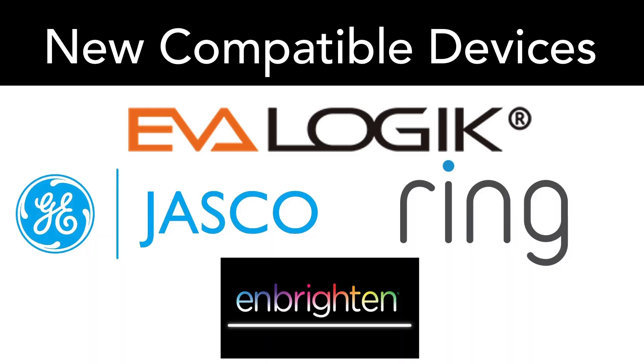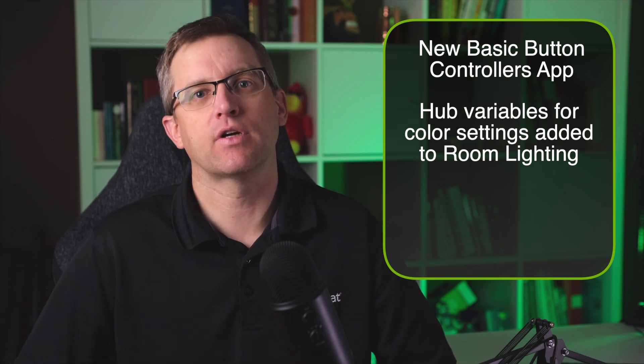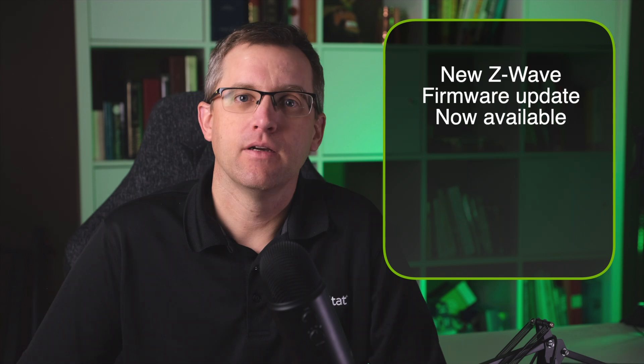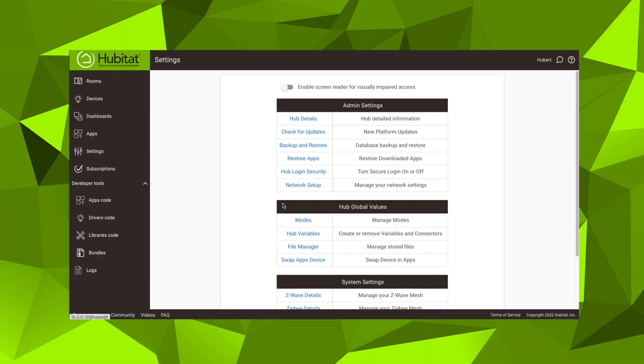Of course, there is plenty more to this update for you non-Apple fanboys. As always, we have several new compatible devices to add to our quiver, including a bunch of new Jasko and Embriton dimmers and switches. We've also added an EVO Logic dimmer and a Ring glass break sensor. Version 2.3.4 adds a new Basic Button Controller app that makes programming your buttons a little bit easier for those who don't need the full rule-building capability of Rule Machine. The Room Lighting app has been updated with the ability to add hub variables for color settings. You can also trigger scenes for Wiz bulbs, which I will be showing you in an upcoming HubWhisper video — it's pretty slick. An optional Z-Wave firmware update is included in this version, which you should probably take advantage of if you use Z-Wave devices. Go into your hub settings, then Z-Wave details to find that update.